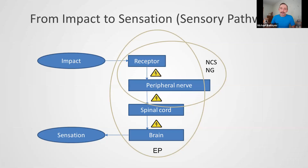Here is a small ellipse with NCS (nerve conduction study) and NG (neurography) titles. With these techniques, it is possible to examine the receptor and peripheral nerve. And here is a big ellipse with EP — evoked potentials. With such techniques, it is possible to examine the full sensory pathway. But as previously, EMG techniques can give us more specific information.